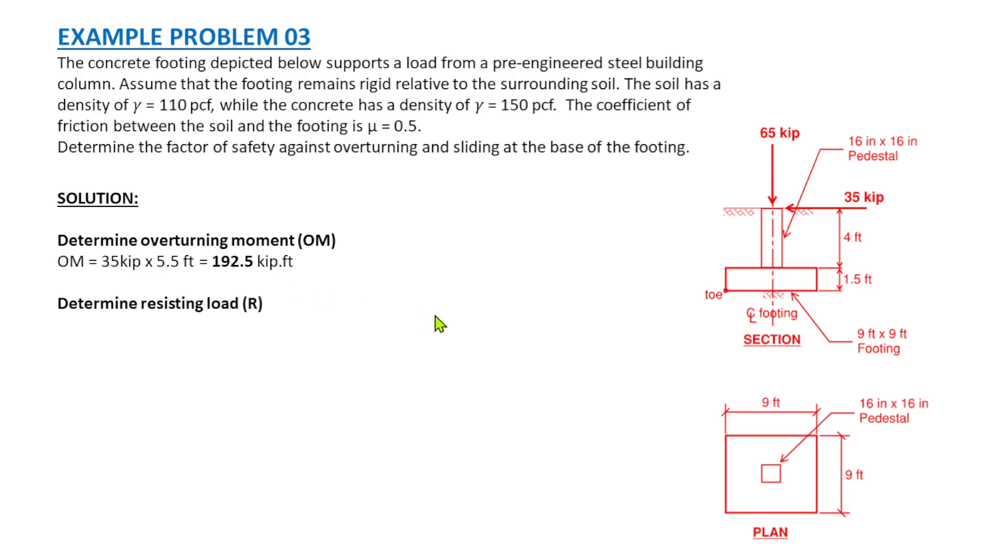Now we will determine the vertical loads due to the soil, pedestal, foundation, and the vertical reaction of the columns. So we have here, determine resisting load R. First, vertical column is 65 kips, which is that one.